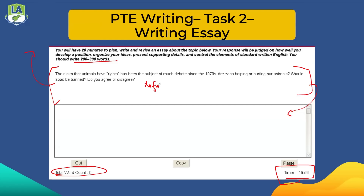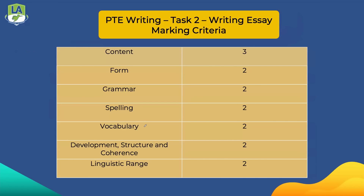Since 100 students writing a perfect answer will all produce different essays, the computer checks content based on keywords relevant and related to the essay topic — not for accuracy. To get three points out of three for content, make sure you address all the questions asked in the essay topic. Include all the keywords from the essay topic in your answer, plus around five to six additional keywords related to the essay topic.